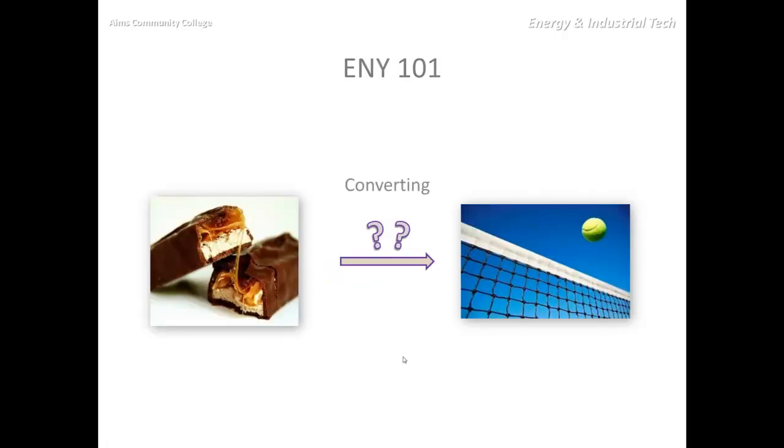So what if we wanted to convert the energy in a Snickers bar into the energy of motion of a tennis ball? How fast do you suppose we could make that tennis ball move if we were able to use all of the energy in the Snickers bar? So we would start with a Snickers bar, and we wouldn't have a potential energy, but there is some food calorie, the kilocalorie. We could then convert that to the kinetic energy of a tennis ball.